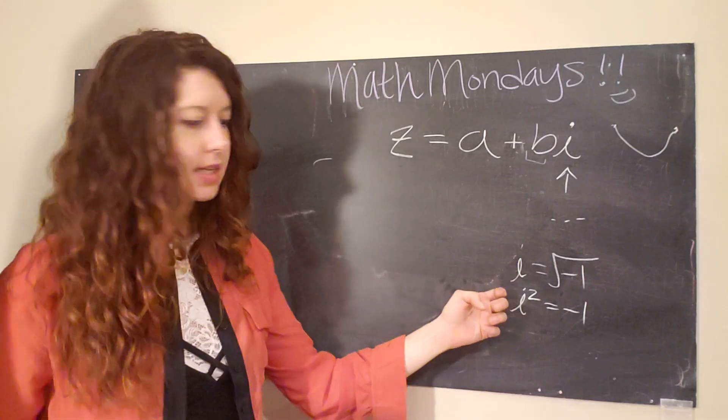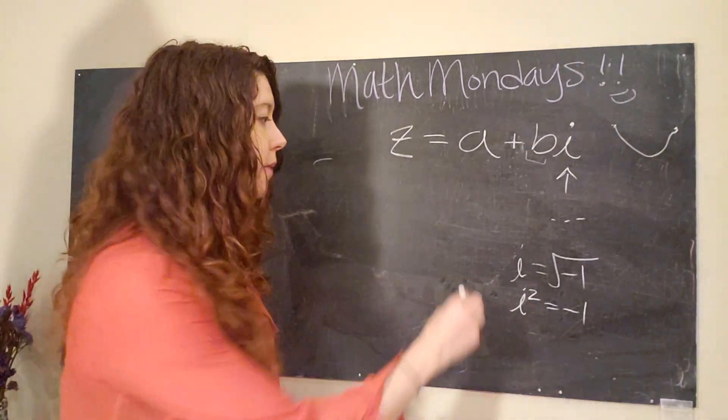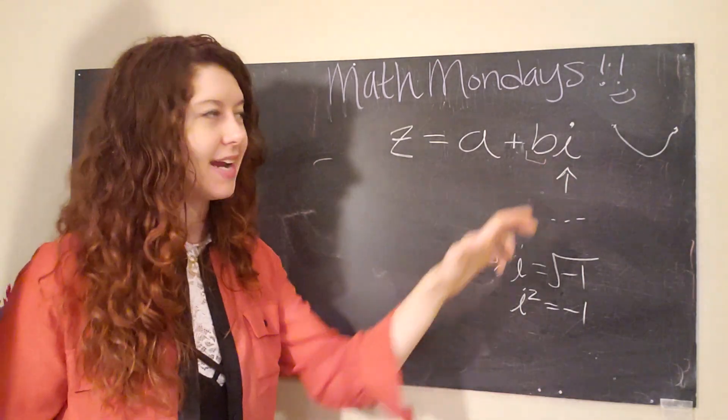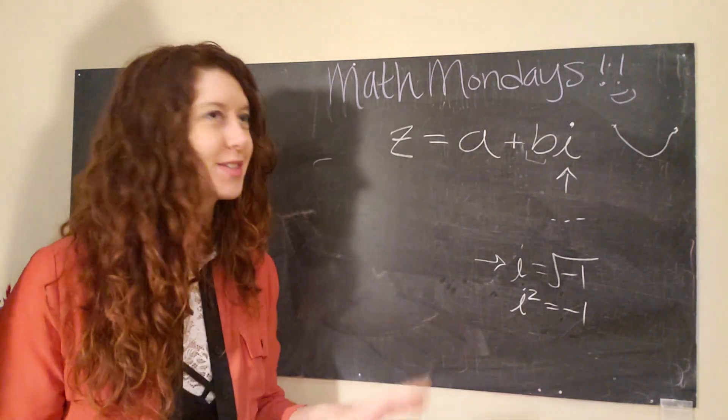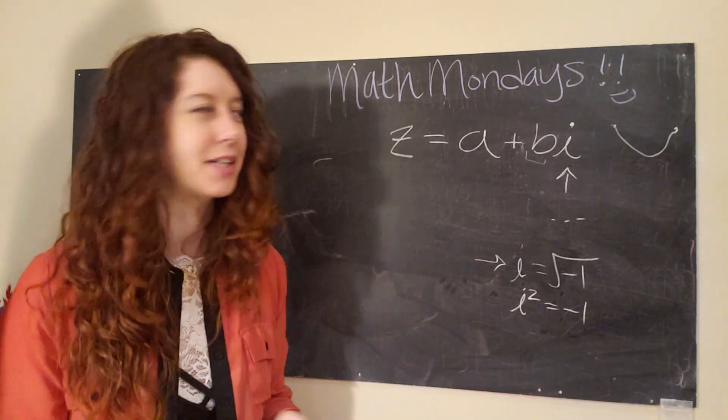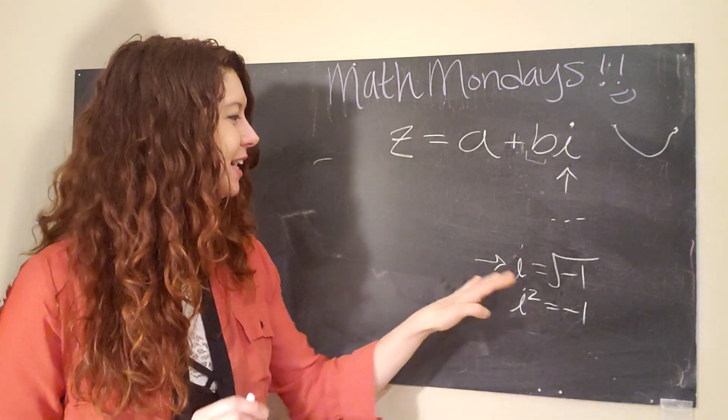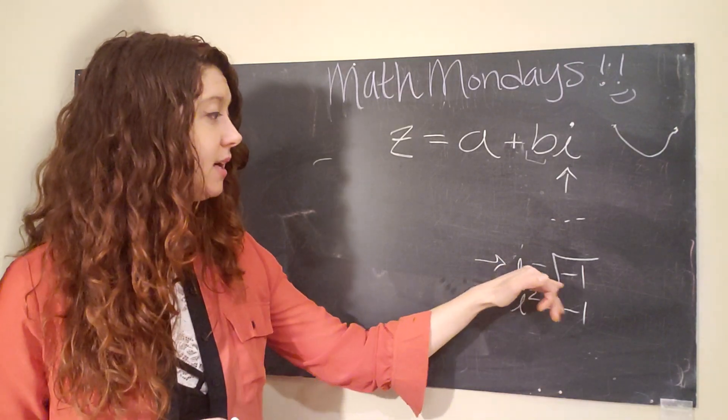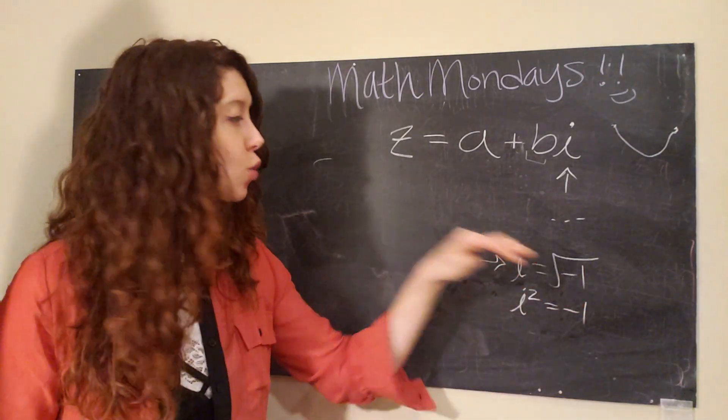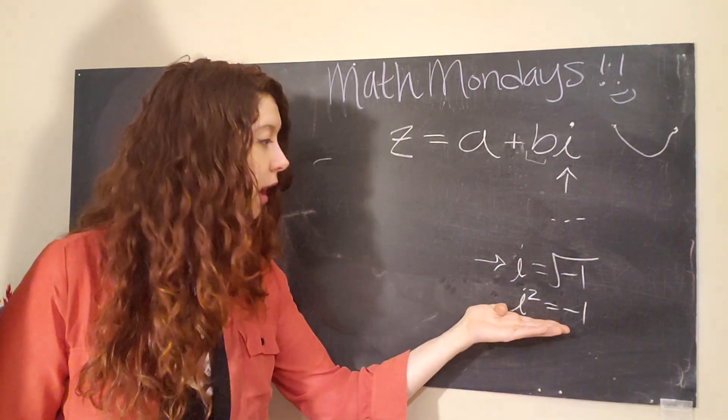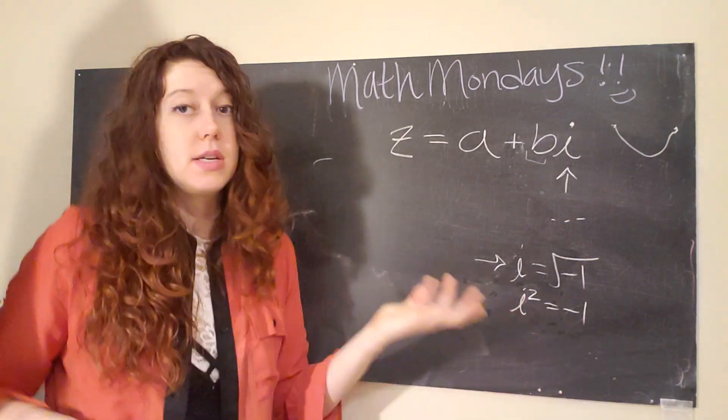So this is the definition of an imaginary number: I equals the square root of negative one, which means that if you square I, it equals negative one.